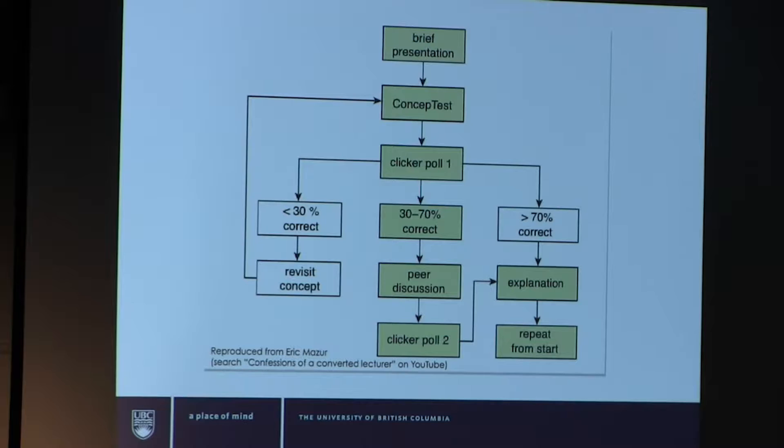There is a diagrammatic overview of how this works. Often in class there may be three different processes. The middle one is the primary process. When more than 70% of the class gets it correct, they might skip the whole process and go directly to an explanation. When less than 30% are getting it correct, it may be worth revisiting before going through the process.